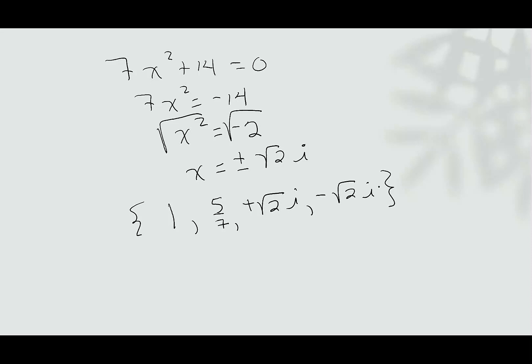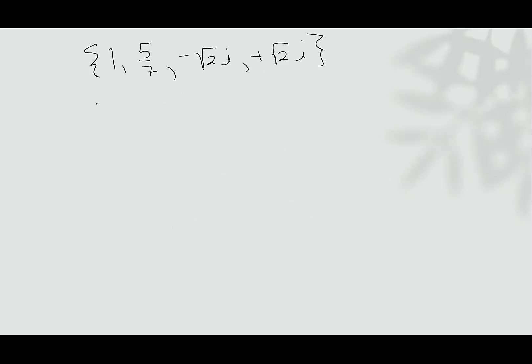Now that we have the roots, we can go back and write the polynomial in factored form. To write our polynomial in factored form, we take each of the factors, x = 1, x = 5/7, x = -√(2i), and x = +√(2i). And we bring the number to the left side. So I'll have x - 1 = 0, x - 5/7 = 0, x + √(2i) = 0, and x - √(2i) = 0. We'll drop the zeros and make these factors of our polynomial.